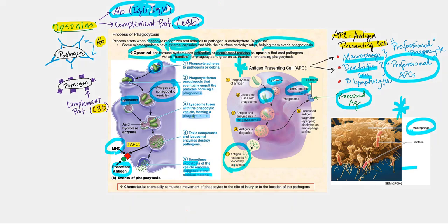Before moving on, let's talk about chemotaxis. Chemotaxis is chemically-stimulated movement of phagocytes to the site of injury or to the location of pathogens — essentially, these phagocytes are following a chemical scent trail to gather in one area and neutralize the pathogens there. We'll talk about chemotaxis further as we go through this presentation and in the discussion of adaptive immunity.